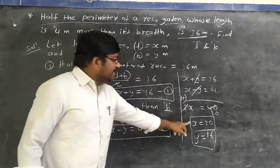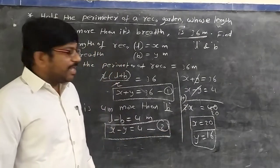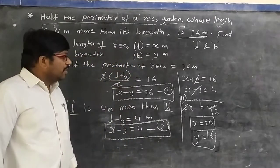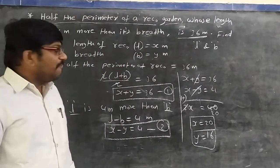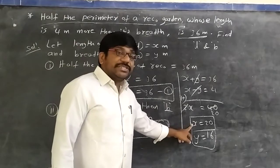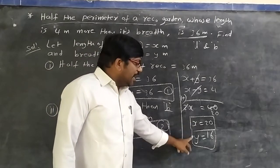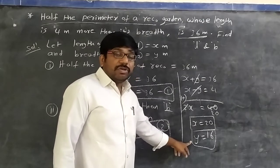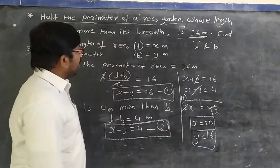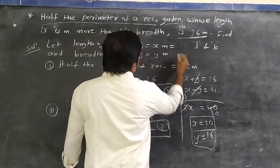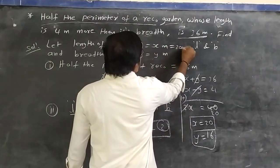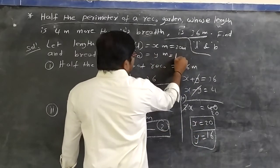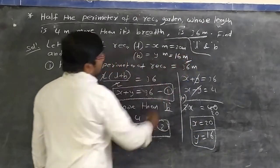Therefore, the length of the rectangular garden x = 20 meters and the breadth y = 16 meters.